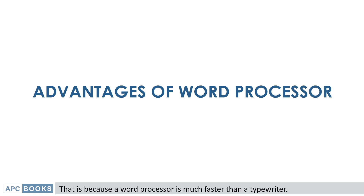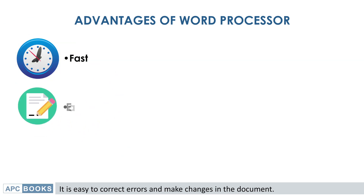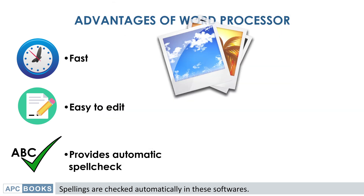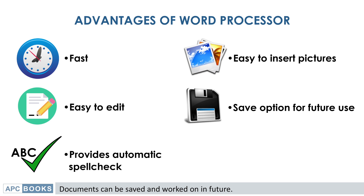That is because a word processor is much faster than a typewriter. It is easy to correct errors and make changes in the document. Spellings are checked automatically in these softwares. Pictures can be inserted in the documents.